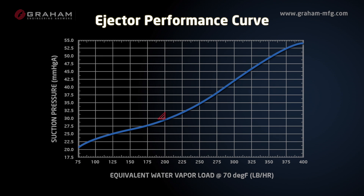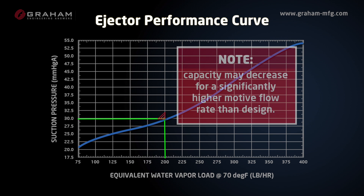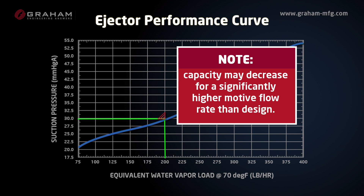If you look at the performance curve for this ejector, you will see the operating point on the curve remains in the same place as motive pressure is increased. It is important to note that capacity may decrease for a significantly higher motive flow rate than design.